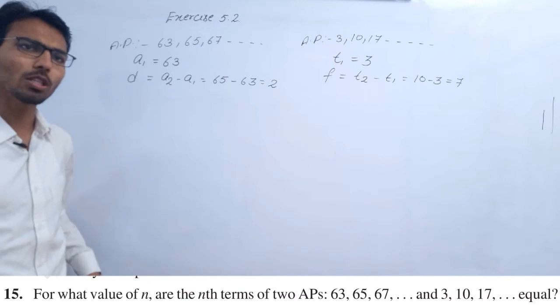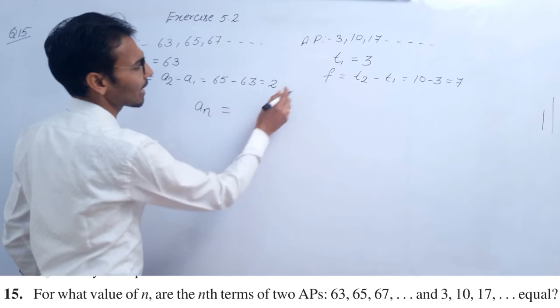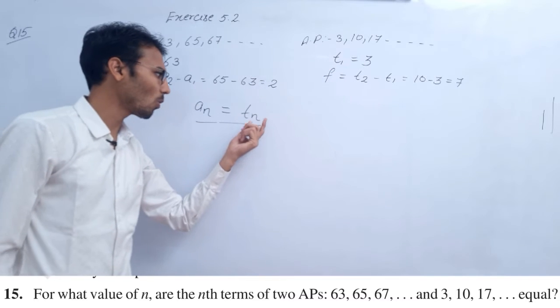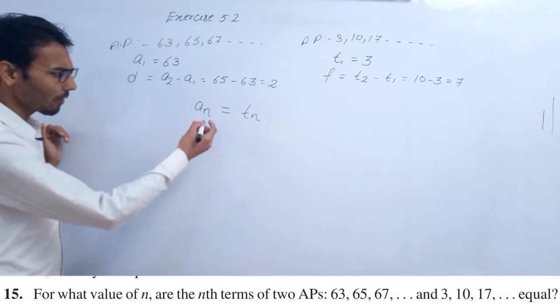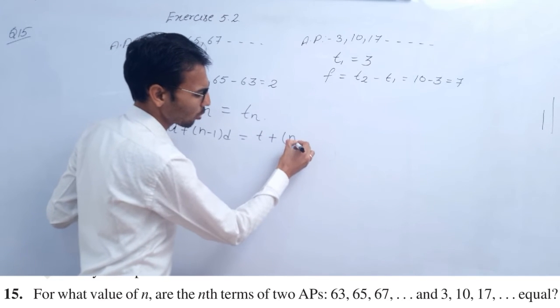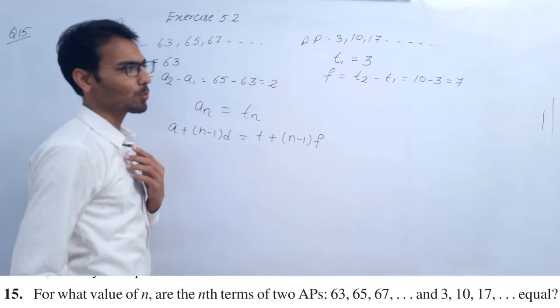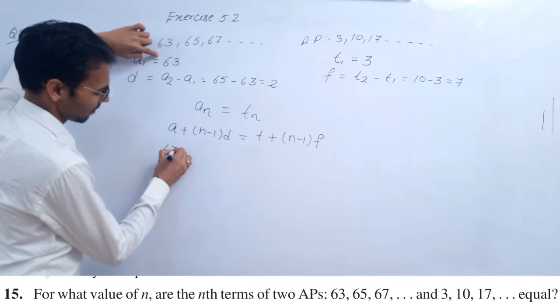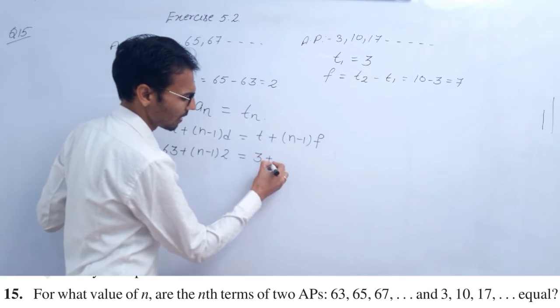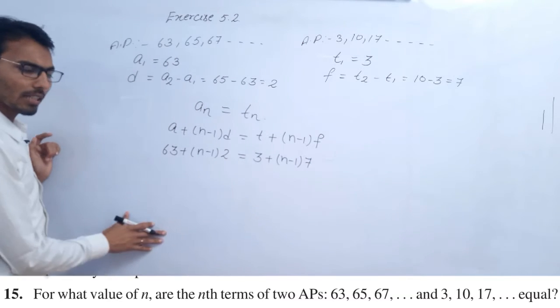The nth term formula is a plus (n-1)d for both. Since the nth terms are equal, we have: 63 plus (n-1) times 2 equals 3 plus (n-1) times 7.